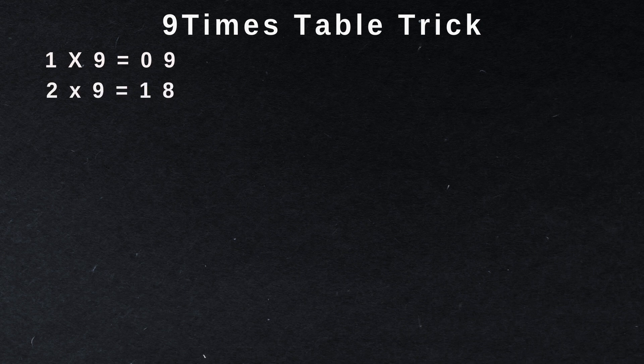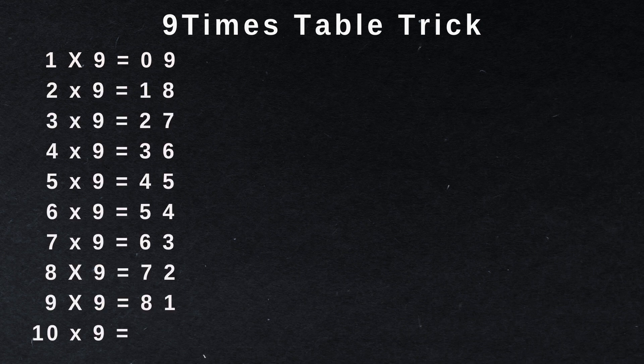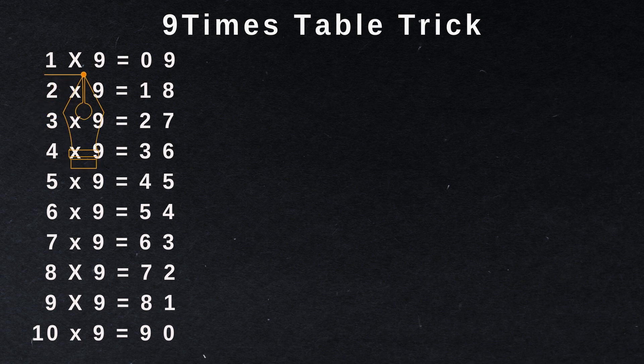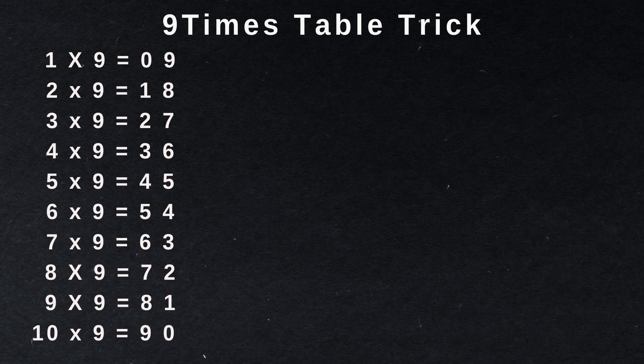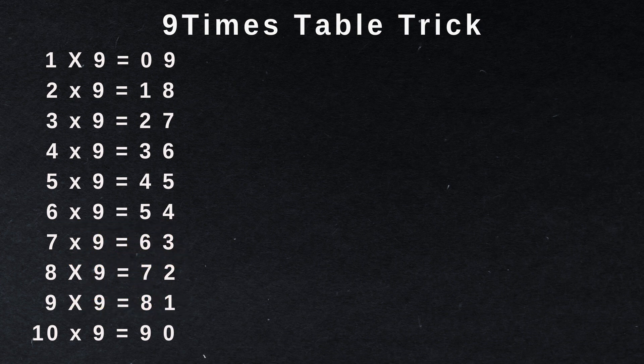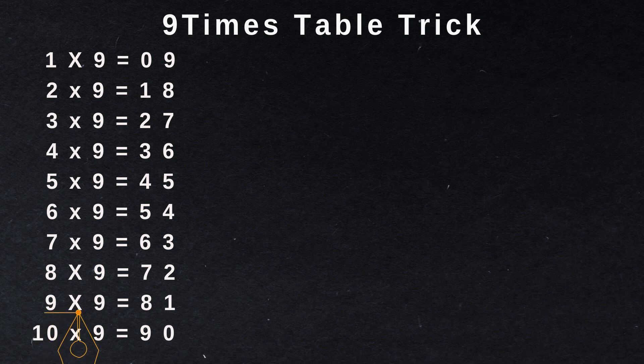Let's look at the first one. Here we're going to write down our whole 9 times table. 1 times 9 is 9, 2 times 9 is 18, 3 times 9 is 27, 4 times 9 is 36, 5 times 9 is 45, 6 times 9 is 54, 7 times 9 is 63, 8 times 9 is 72, 9 times 9 is 81, and 10 times 9 is 90.